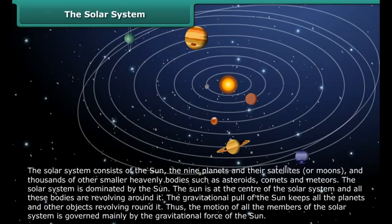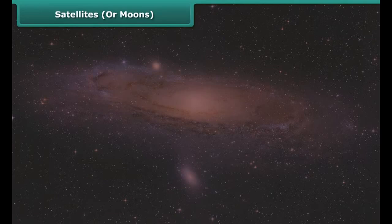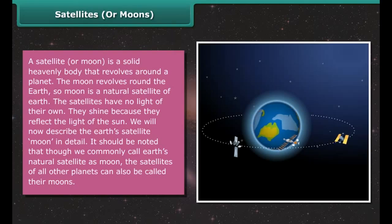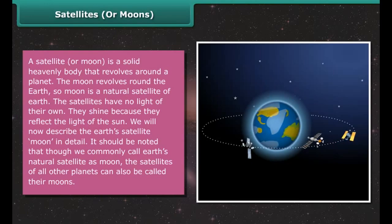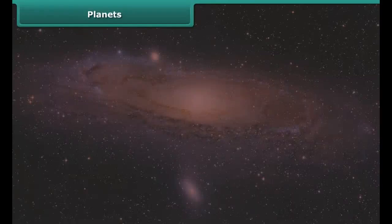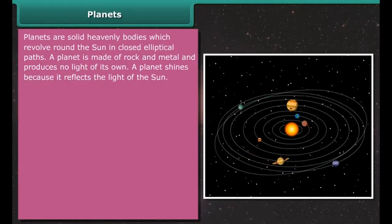Ursa Major Constellation, or Great Bear Constellation — the Indian name is Sapta Rishi. It reminds us of a large ladle or a question mark in the sky, and consists of seven bright stars arranged in a pattern resembling a big bear. Ursa Minor, or Small Dipper, also has seven stars in it; the Pole Star forms the handle tip of Ursa Minor. The Indian name of Orion Constellation is Mriga; it also consists of seven prominent stars arranged to resemble a hunting man.